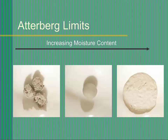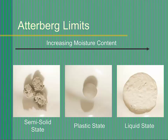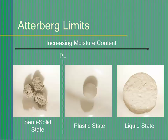The Atterberg limits are water content measurements that define the boundaries between the three soil states of semi-solid, plastic, and liquid. When a soil has a moisture content at its plastic limit, it is at the boundary between semi-solid and plastic behavior. If water is removed from the soil, it will behave like a semi-solid that cracks when it is deformed. If water is added, it will act like a plastic material that will be moldable and deformed without cracking.